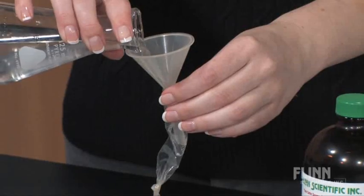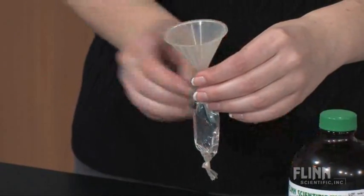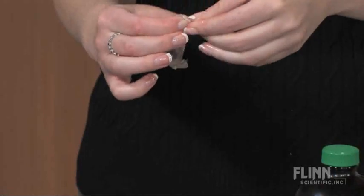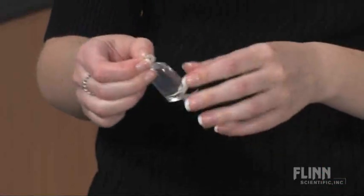We then fill a piece of dialysis tubing, which is tied at one end, with the starch solution. Then close the other end of the bag by tying it shut, but try to leave as little air as possible.